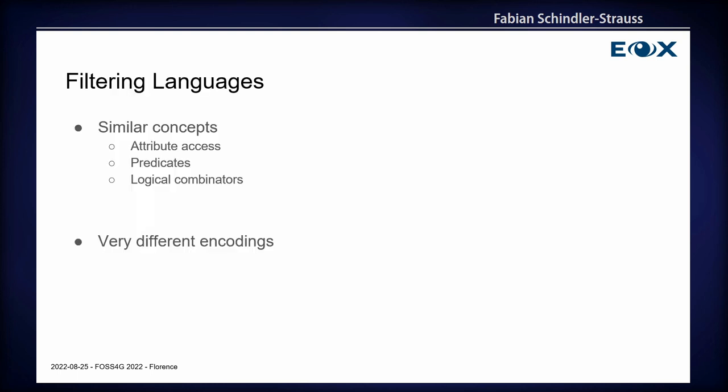So, they have very similar concepts. They allow you to access the attributes of your records. They allow you to specify predicates — usually spatial, temporal, and other ones. And then you have logical combinators. But the encoding is very different, and if you want to support more than one, you basically have to write your own parser for everyone and apply them to your business logic, which is hard.